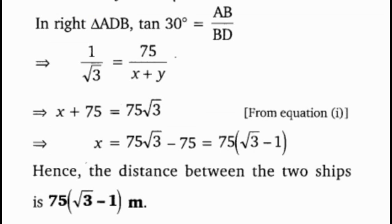Now let's consider triangle ADB. In triangle ADB, applying tan theta — opposite side by adjacent side — tan 30 degrees equals AB upon BD. Tan 30 equals 1 upon root 3, which implies 1 upon root 3 equals 75 by (x plus y), since BD is x plus y. So x plus 75 equals 75 root 3, therefore x equals 75 root 3 minus 75, which gives 75(root 3 minus 1). From equation 1, substituting y equals 75, the distance between the two ships is 75(root 3 minus 1) meters.